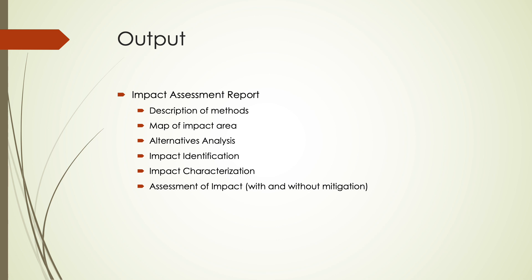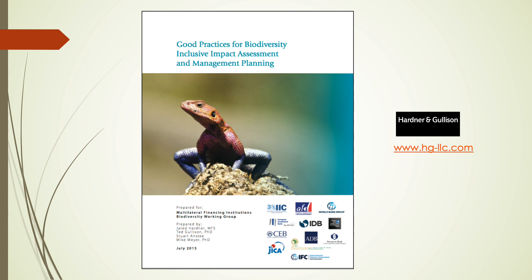Following is a list of the critical elements of the impact assessment. It should include a description of methods, map of area of impact, alternatives analysis, impact identification, impact characterization, and an assessment of impact with and without mitigation. For more detailed information on biodiversity impact assessments, see Good Practices for Biodiversity Inclusive Impact Assessment and Management Planning. You can also visit us on the web at www.hg-llc.com. Thanks, and I hope to see you soon in the field.